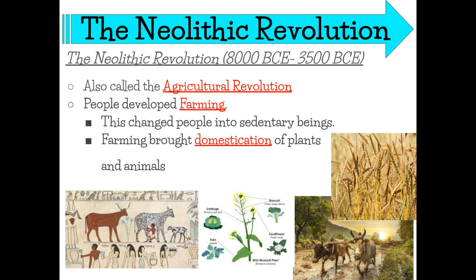The Neolithic Revolution began around 8,000 BCE. This is a major development that changed the entire course of history forever. It's also known as the agricultural revolution because that's when agriculture really took off. People used to be more mobile — moving from place to place, carrying their belongings, following the food. Once the Neolithic Revolution came around, they no longer had to do that and changed their whole lifestyle into a sedentary life.